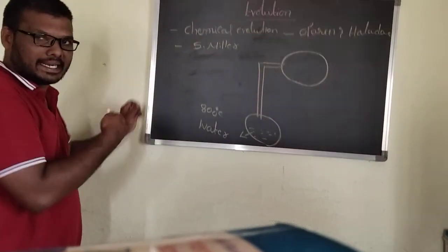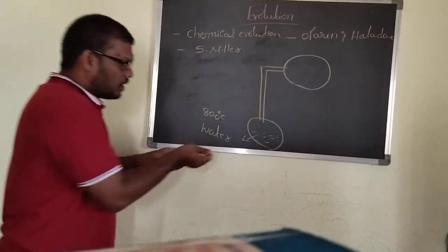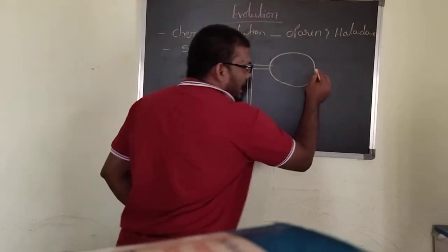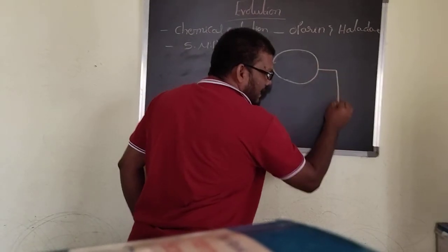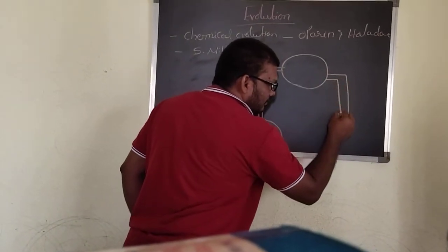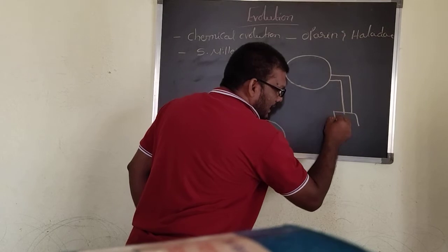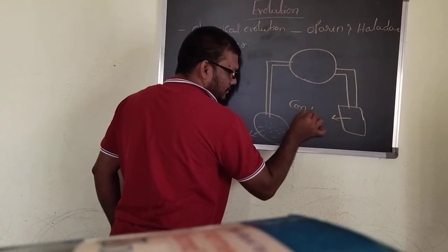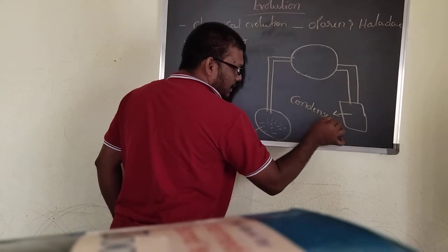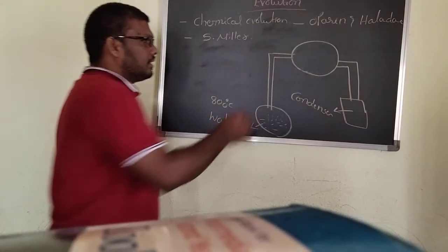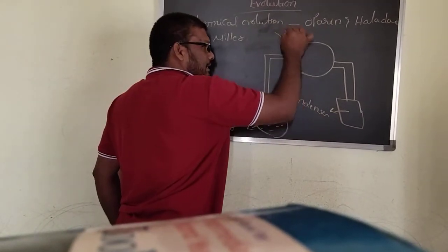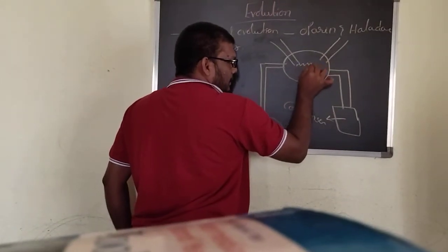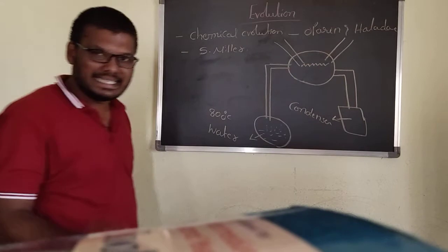Why it is heated to 800 degrees centigrade, we will discuss later. Now the water vapor is coming out. Another side it is connected with a condenser. In the spark chamber, we connected electrodes for electrical discharge.